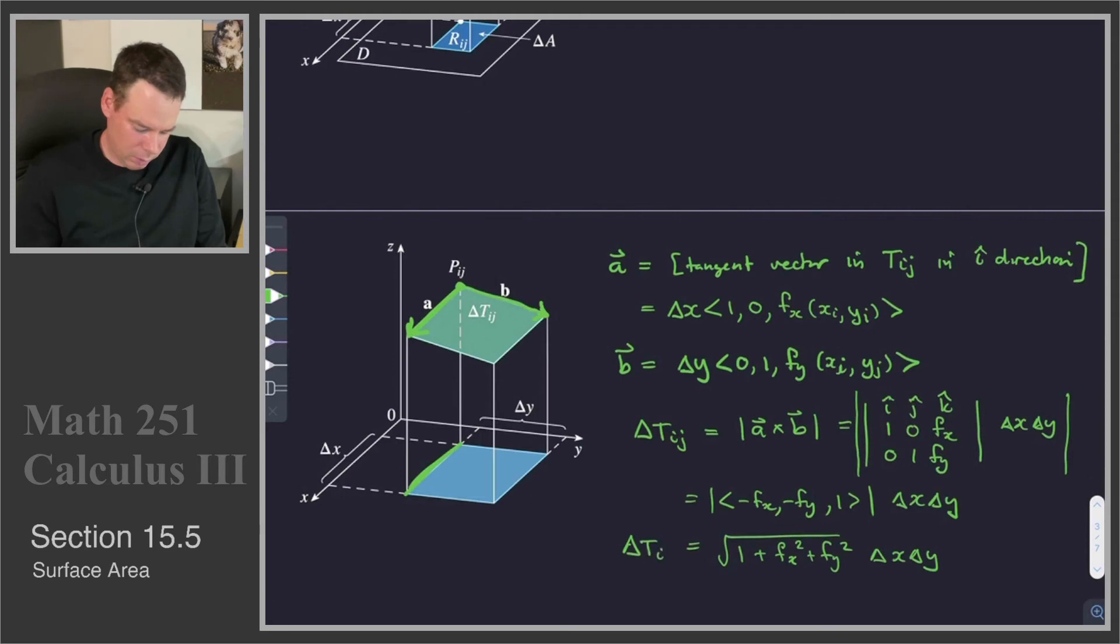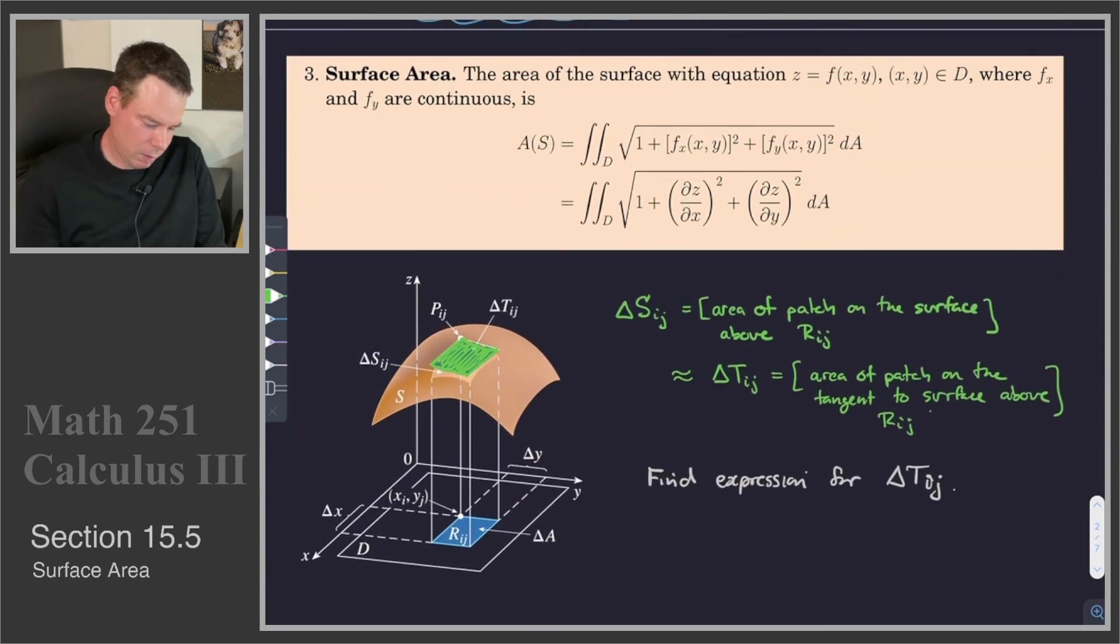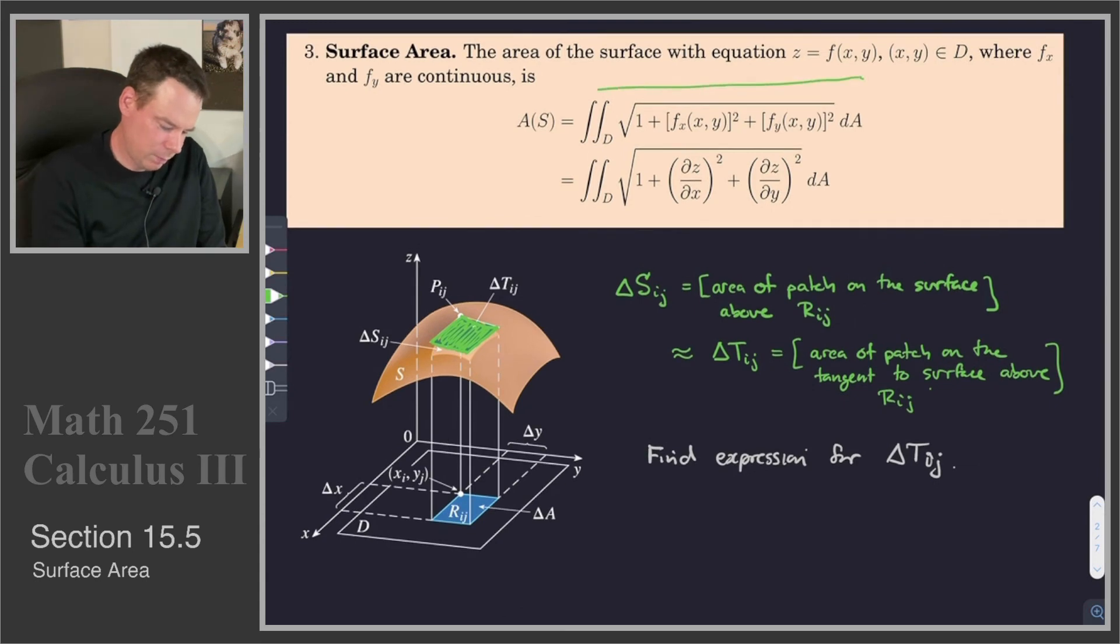So that is our estimate for the area of the little patch above rectangle rij. And if I sum over all of these things and look at the delta x and delta y going to 0, then what it does is it converts it to an integral over the whole region of this square root function of 1 plus the partial derivative squared with respect to x plus the f sub y squared. And so that proves our result stated right back here that says the surface area is given by this double integral. We are integrating the square root of 1 plus f sub x squared plus f sub y squared.